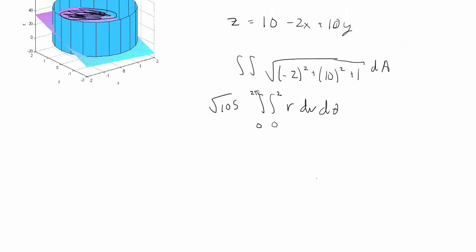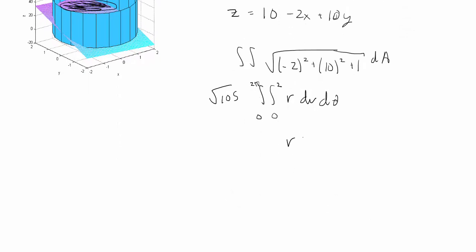And then once we solve for that, we'll get the final answer. So that's going to give us R squared over 2 from 0 to 2 times 2 pi times square root of 105. Plugging in 2 will give us 4 over 2. That's 2 times 2 pi. Our final answer will be 4 pi times the square root of 105.